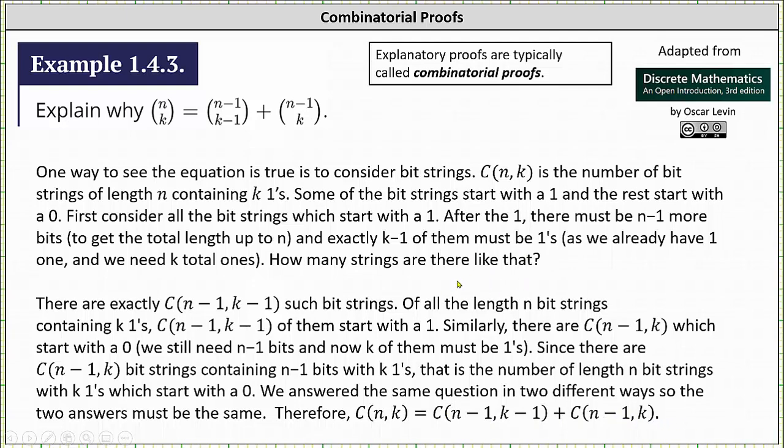So this would be one possible combinatorial proof for the binomial identity. Let's take a look at a second combinatorial proof.